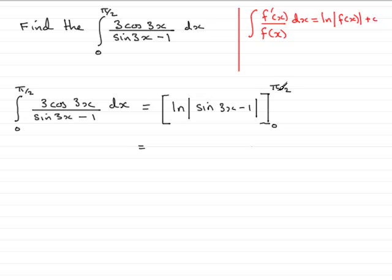We now substitute the pi upon 2 in wherever we have the x. So, we have the natural log then of the mod. Don't forget that. The mod of sine of 3 lots of pi upon 2. So, it's going to give 3 pi over 2. Then we have minus 1.